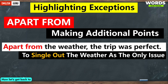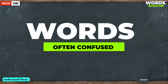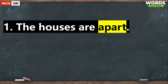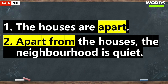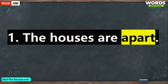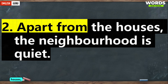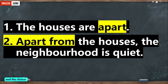Now let's go back to the initial pair of sentences and understand them in detail. The first pair: 'The houses are apart' and 'Apart from the houses, the neighbourhood is quiet.' Both sentences are grammatically correct and convey different contexts. 'The houses are apart' implies the houses are separated by some distance. 'Apart from the houses, the neighbourhood is quiet' indicates that except for the houses, the entire neighbourhood is quiet.